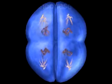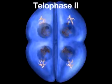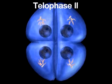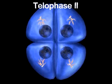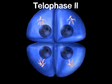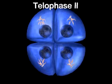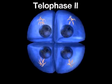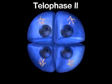During telophase II, nuclei reform, the spindle breaks down, and the cytoplasm divides. Four cells, each with half the number of chromosomes, are produced.